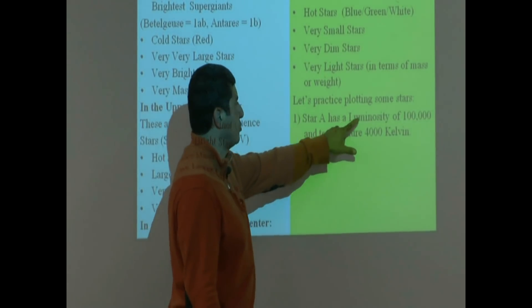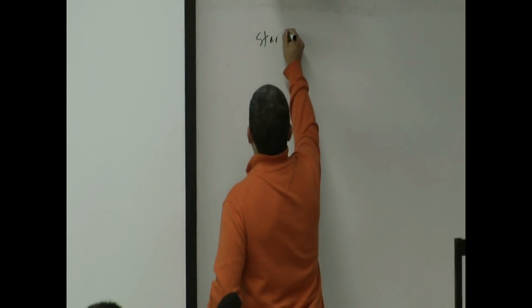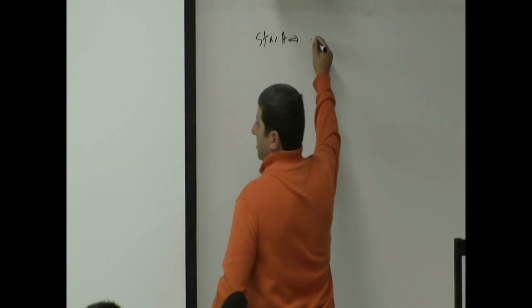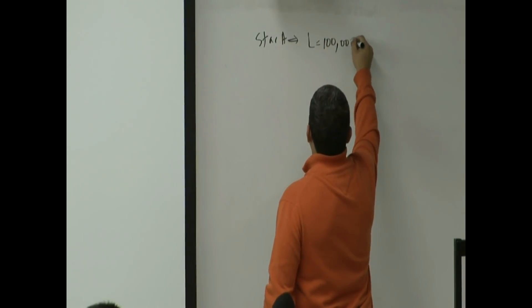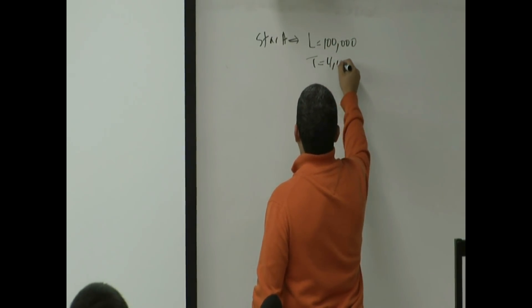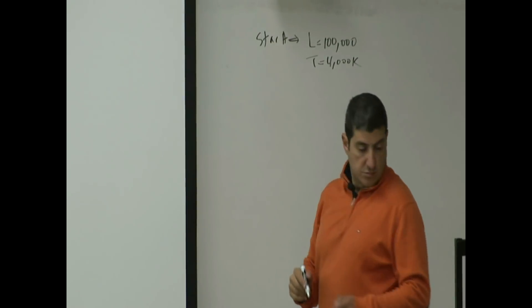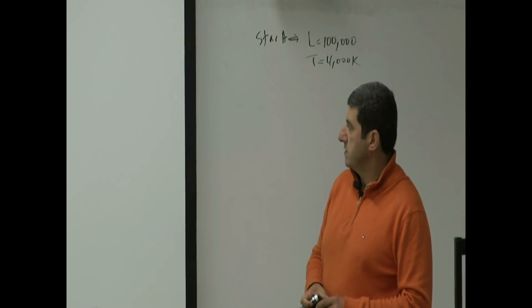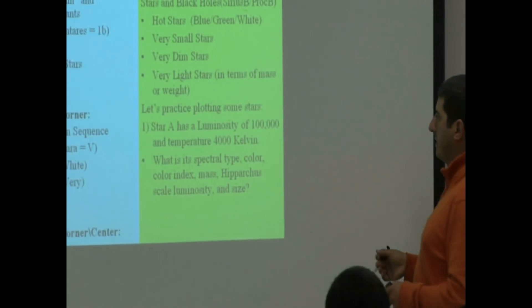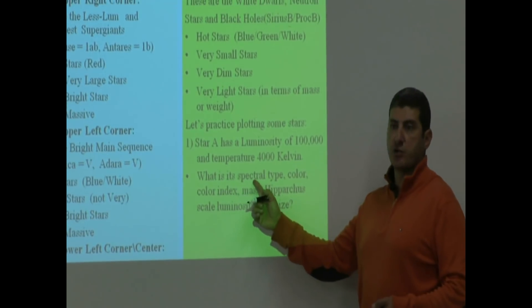Star A has a luminosity of a hundred thousand and temperature four thousand. Plot it on the HR diagram, and then you can ask these other questions about it.